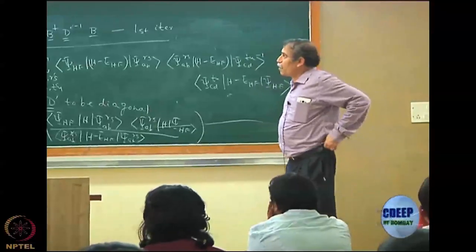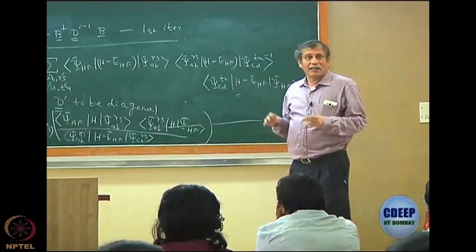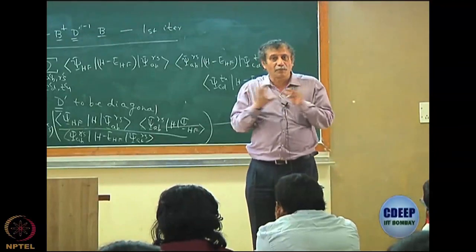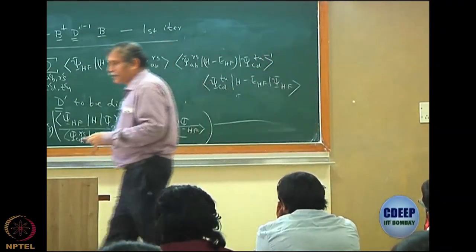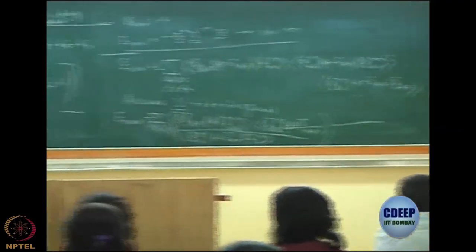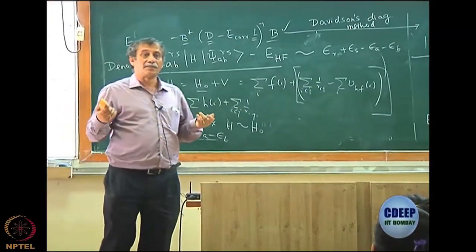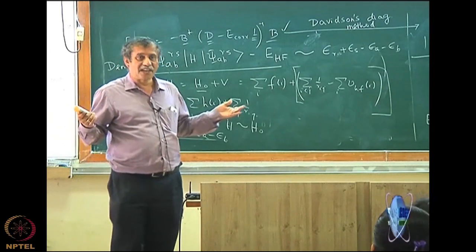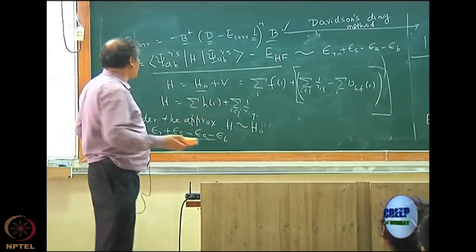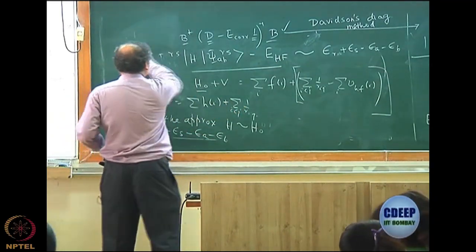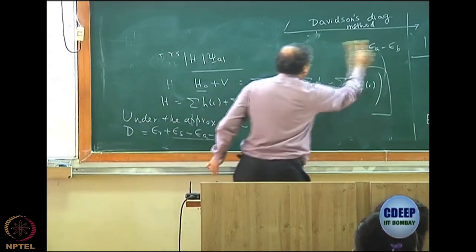What we will do now is go back to the DCI and look at the structure of the DCI a little bit more and understand. However, before I do that, let me also tell you that it is trivial to add singles and triples to the CI equation, something that I would not like to do in detail, but at least SDCI is important to do.